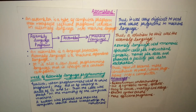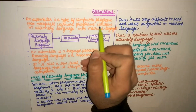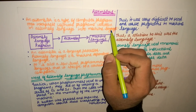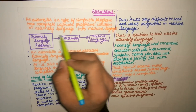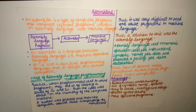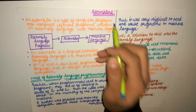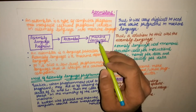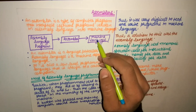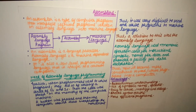Hello everyone. In this video we will learn about assemblers. An assembler is a type of computer program that interprets software programs written in assembly language into machine language. So we write something in assembly language, then use the assembler to convert it. Assembly language program → Assembler → Machine language output.